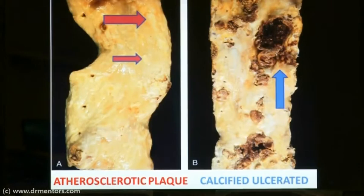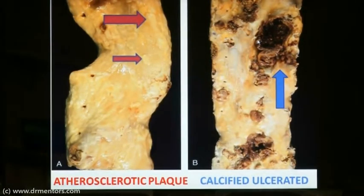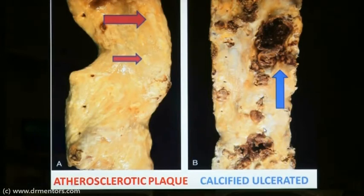This other specimen on the side shows a calcified ulcerated plaque, hence a complicated lesion. The plaque is ulcerated and hemorrhage is also seen. The calcified lesions are mostly chalky white in appearance, and characteristically when you cut these lesions you will have a very gritty sensation, which is characteristic of calcified plaques.